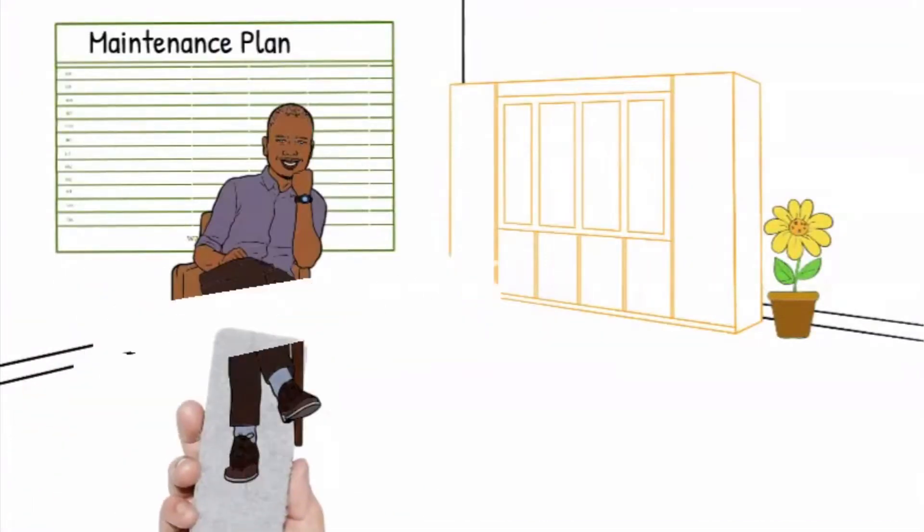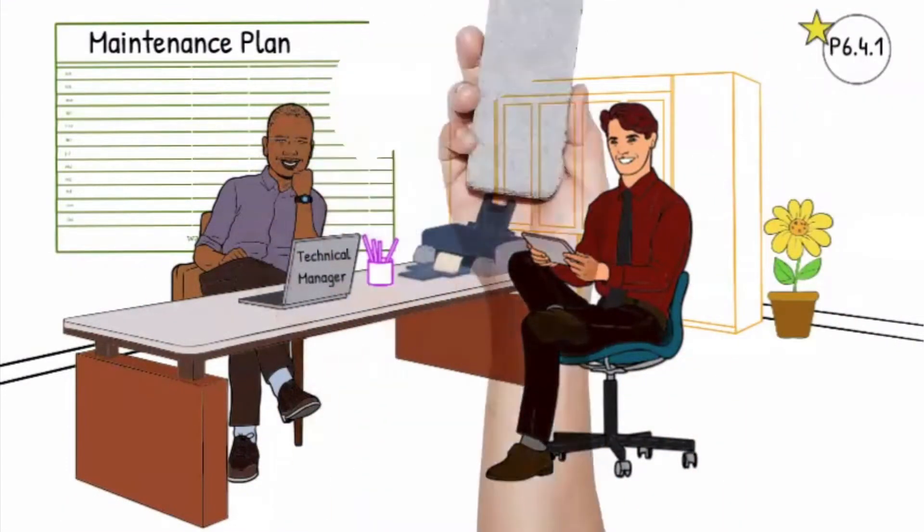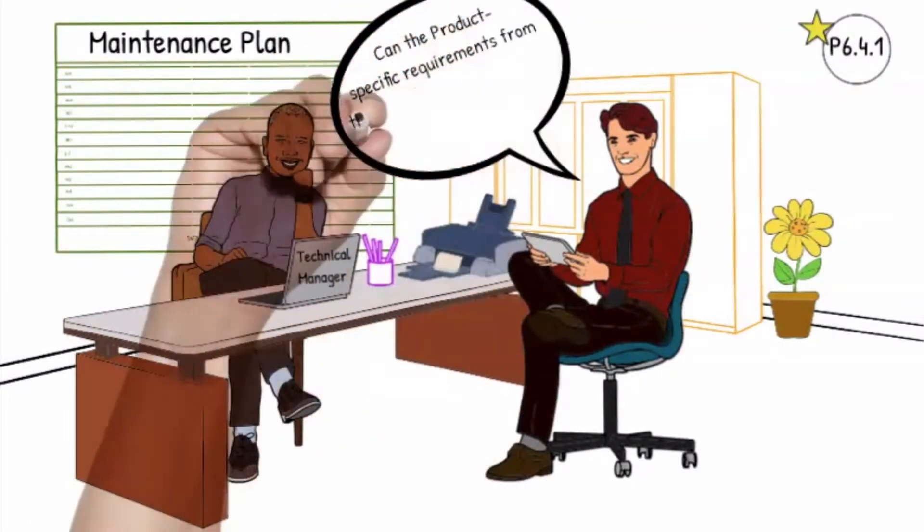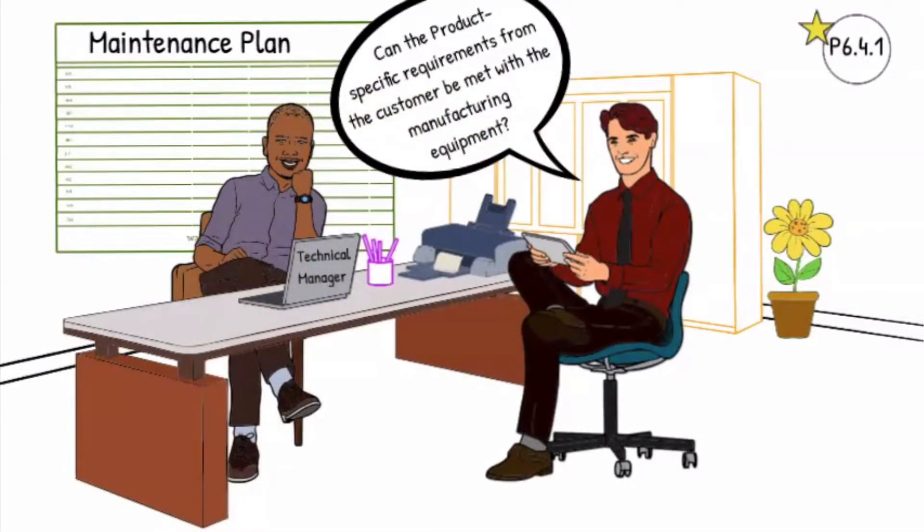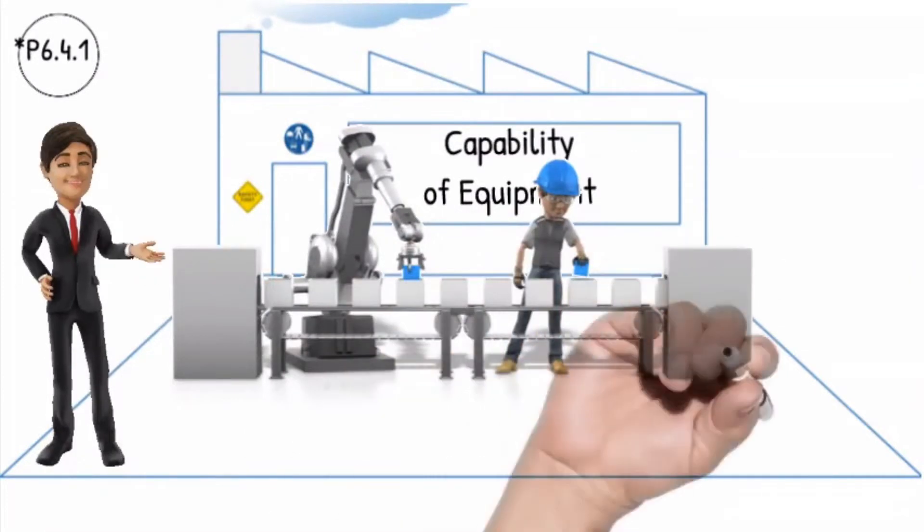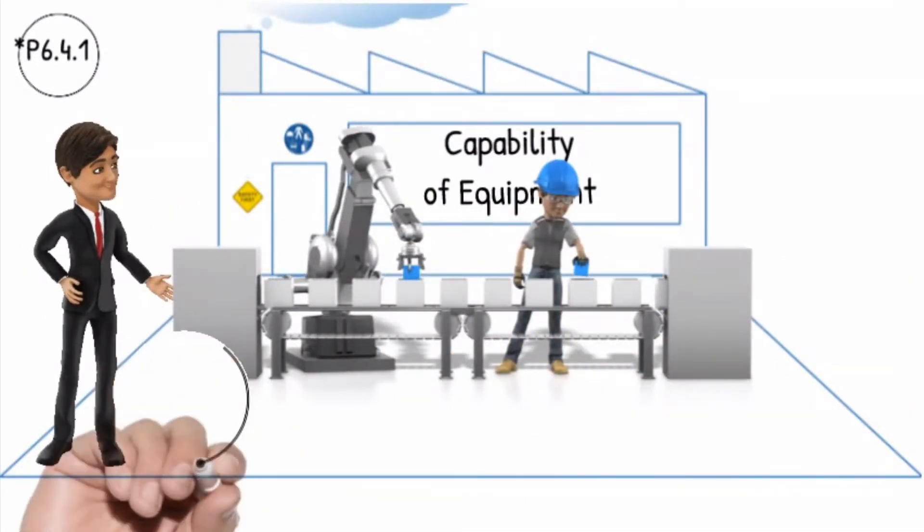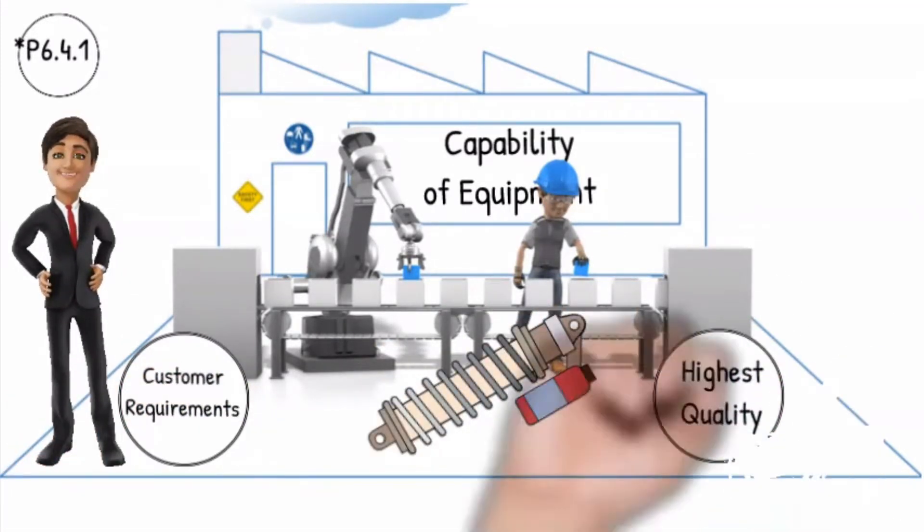In this session we will be auditing the technical manager P6.4.1. Can the product specific requirements from the customer be met with the manufacturing equipment? There must be evidence that the processes are implemented using the existing production facilities in accordance with the customer's specifications and that the resulting products are of the highest quality.